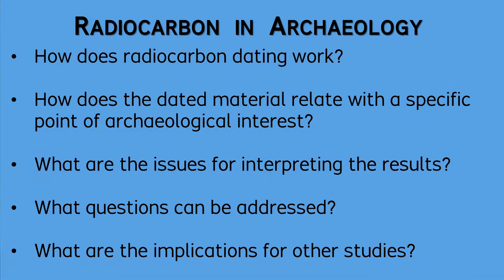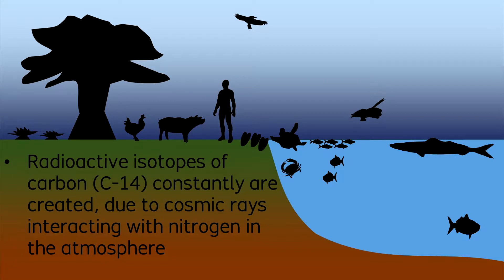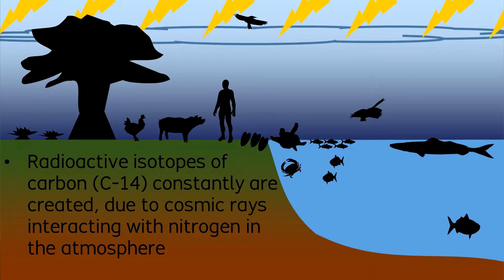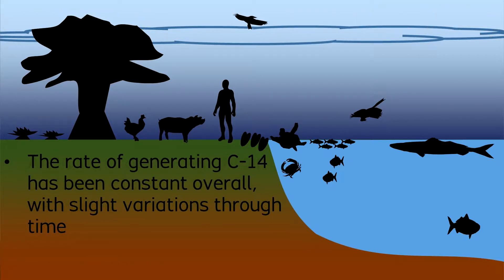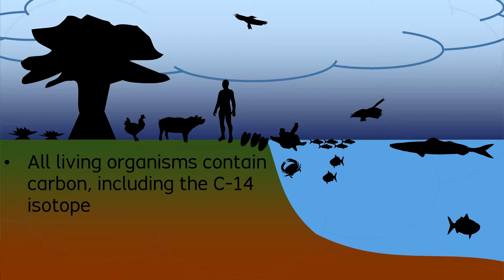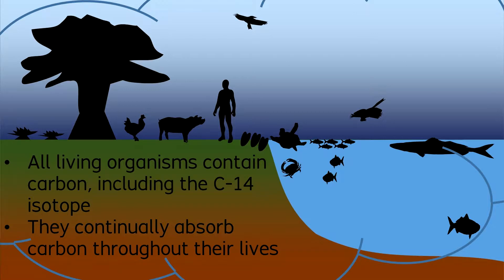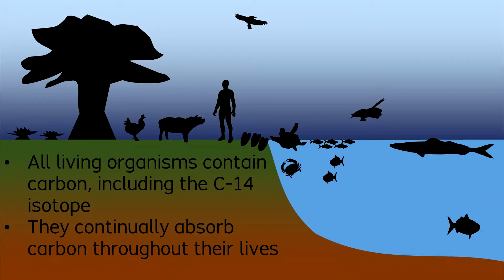In order to understand how radiocarbon dating works, first you can think about what happens to the carbon in our atmosphere. One particular isotope of carbon, called carbon-14, is radioactive. Its radioactivity occurs due to cosmic rays interacting with nitrogen in the atmosphere at a roughly stable rate through time, with minor fluctuations. Carbon becomes a part of all living organisms of plants and animals, and throughout their lives, organisms continue to absorb carbon, including the C-14 isotope.